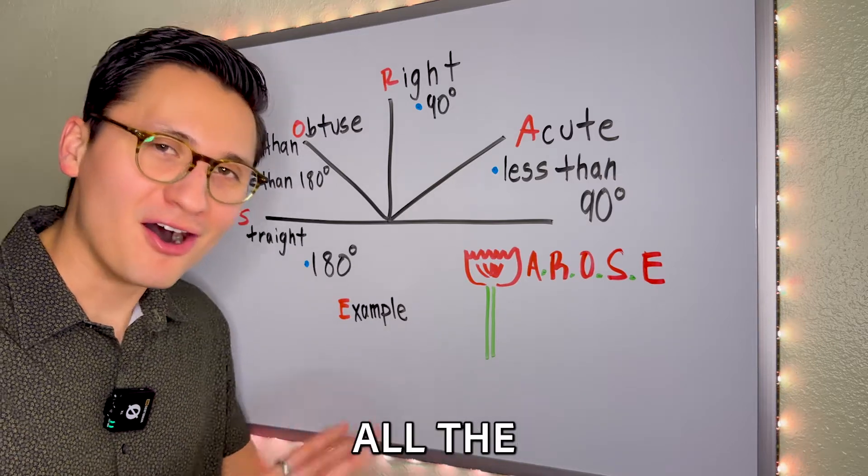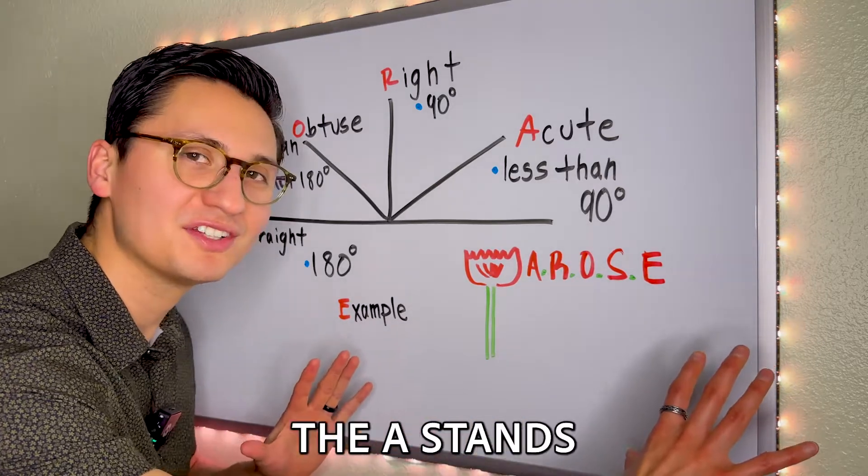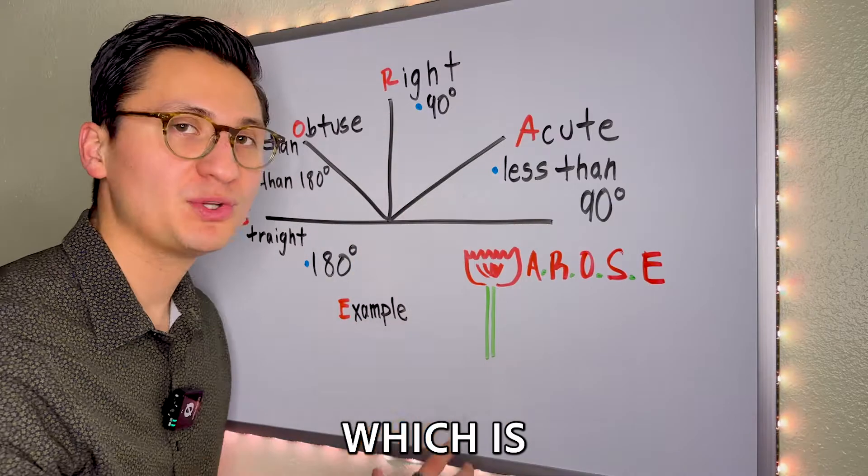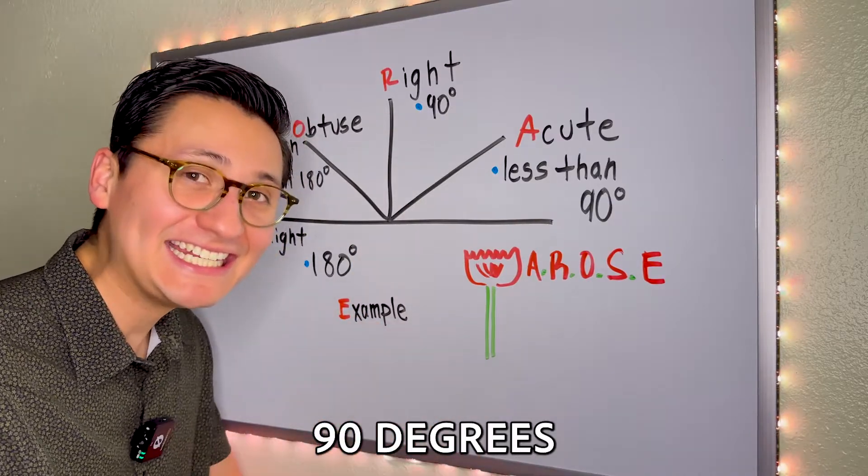Here's an easy way to remember all the angles: a rose. The A stands for acute, which is going to be less than 90 degrees.